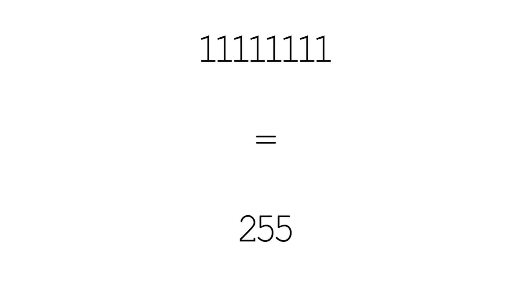A precursor to this video: you need to watch my video on binary — you'll find a link just up here. When we talk about bits, we're talking about the 1 or the 0 that you find in binary. So 8-bits means 8 lots of 1s or 0s. Eight 1s in a row is an 8-bit value.